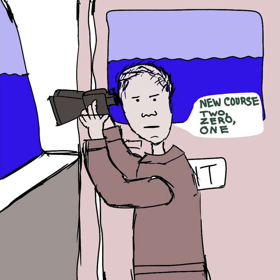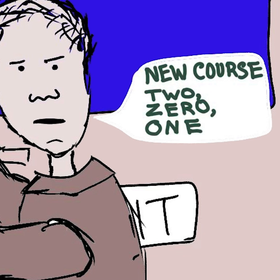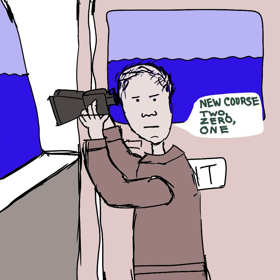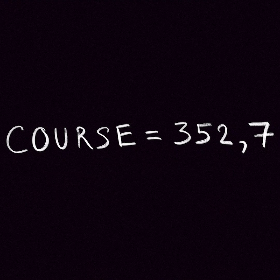When you are dealing with course, you should spell all three digits separately and very clearly. This is how it is usually done in the marine industry. Normally it is not necessary to use the decimal of a degree, but in some cases it might be required.